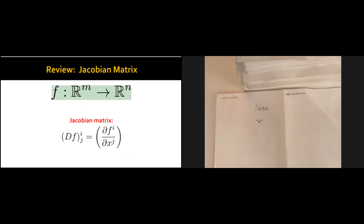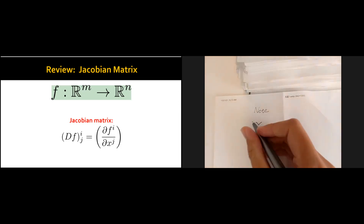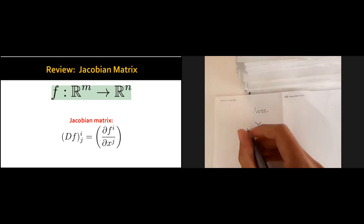This brings the question: what conditions should we add to avoid all these pathological cases? To understand the real problem, we use the Jacobian matrix. As a quick review, the Jacobian matrix for a function from R^m to R^n is an n-by-m matrix that describes all possible partial derivatives of function F.